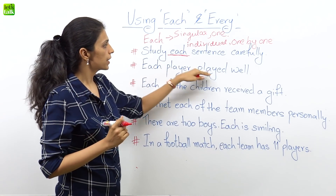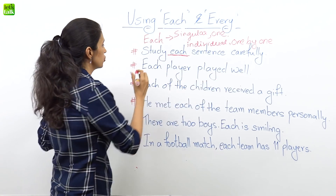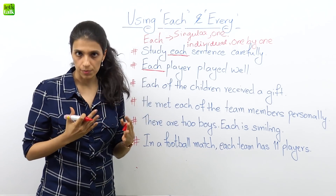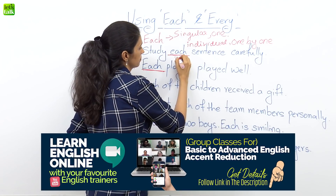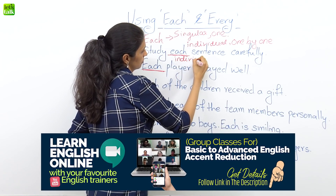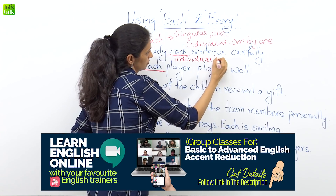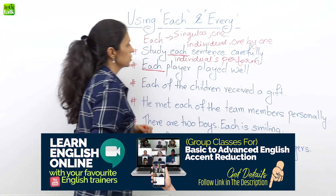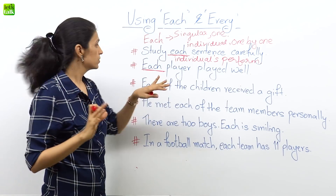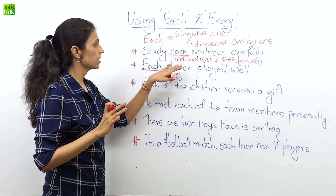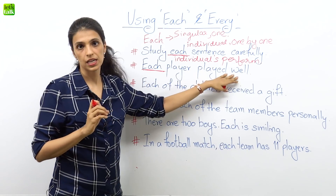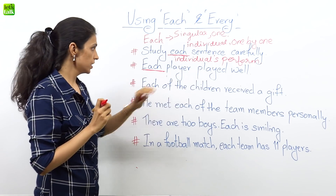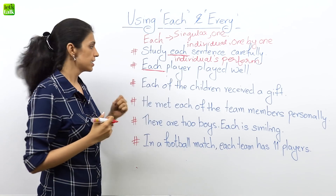My next example: 'each player played well.' Now 'each player' means I'm talking about an individual's performance. So individually, each player played well — I mean one individual at a time.